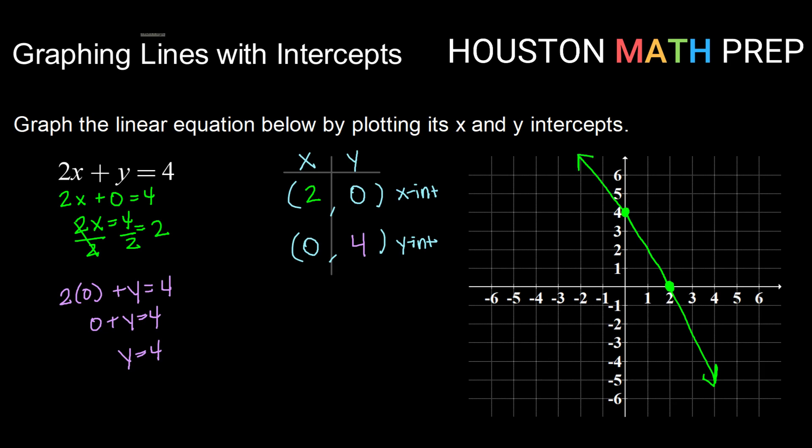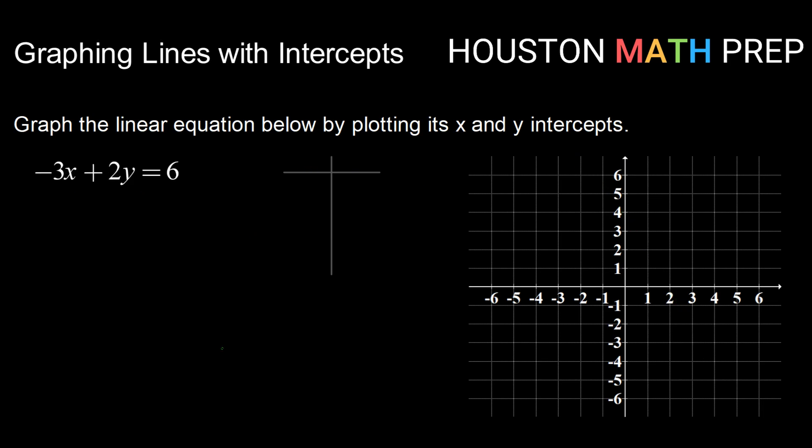All right, let's check that out one more time. Here looking at the equation negative 3x plus 2y equals 6. We want to graph this once again by finding its x and y-intercepts. So setting up to find solution points. If I want to know my x-intercept, I need to know what's happening when y equals zero. If I want to know my y-intercept, I need to know what's happening when x equals zero.